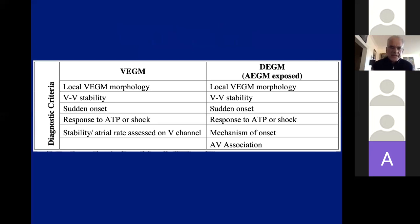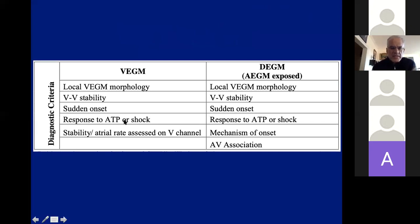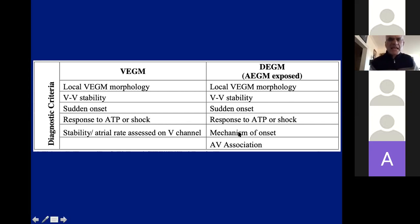What criteria do we use to differentiate? If you have a single-chamber electrogram — only VEGM — you can use local VEGM morphology, look at VV stability at onset, whether it's sudden or not, response to ATP or shock, and sometimes you can see atrial far-field signal on the ventricular channel. If we have dual-chamber electrograms, you have all that plus you can judge the mechanism of onset, see if it was a PAC or PVC, and judge AV dissociation or association.